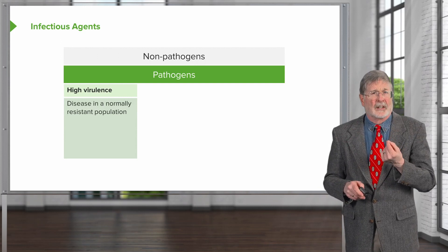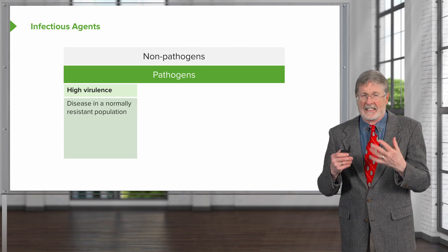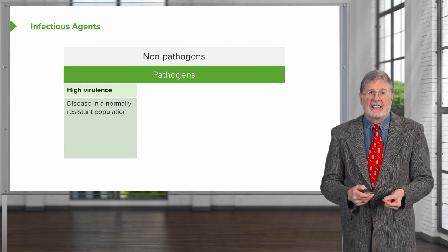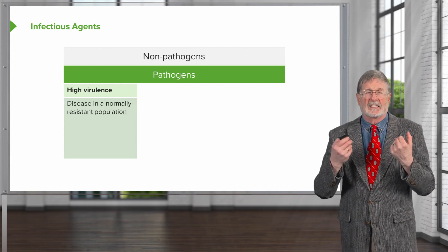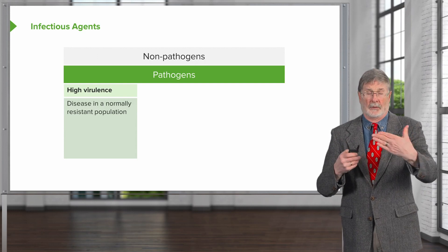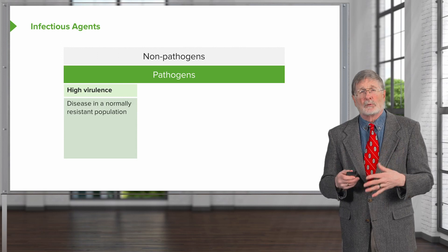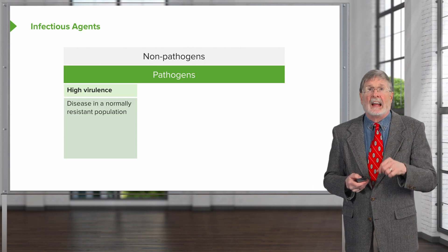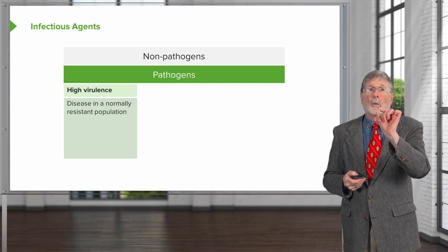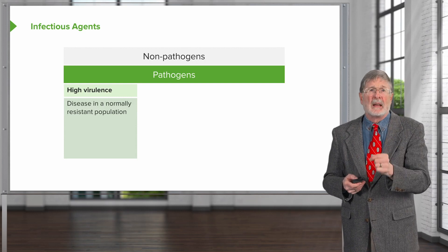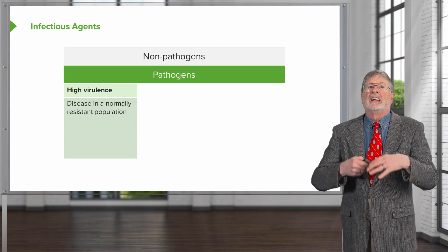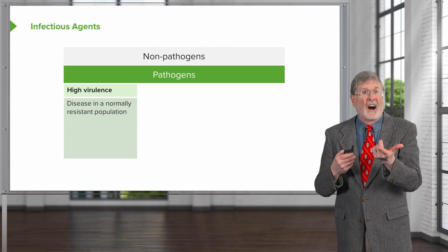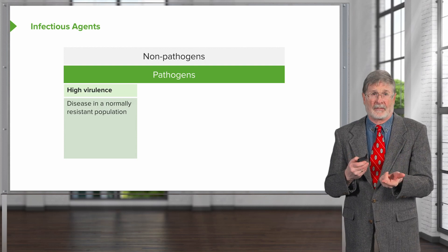The first category is high virulence. These are microbes — bacteria, fungus, whatever — that cause disease in a normally resistant population: healthy individuals without any comorbidities or anything else going on. If we get exposed to them, we are going to have disease in many cases. Influenza, coronavirus, and hepatitis are all reasonably high virulence pathogens.